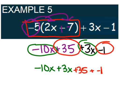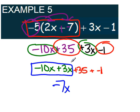Just remember, I don't like to deal with subtraction. Now I can combine my like terms. So this negative 10x and positive 3x will give me a negative 7x. Then I can add my constants together. The positive 35 and the negative 1 will give me a positive 34.